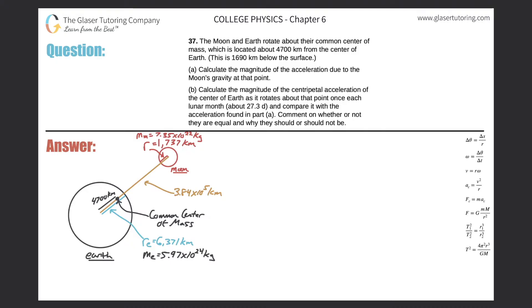Number 37. The moon and earth rotate about their common center of mass, which is located about 4,700 kilometers from the center of the earth. This is 1,690 kilometers below the surface. Letter A: Calculate the magnitude of the acceleration due to the moon's gravity at that point.